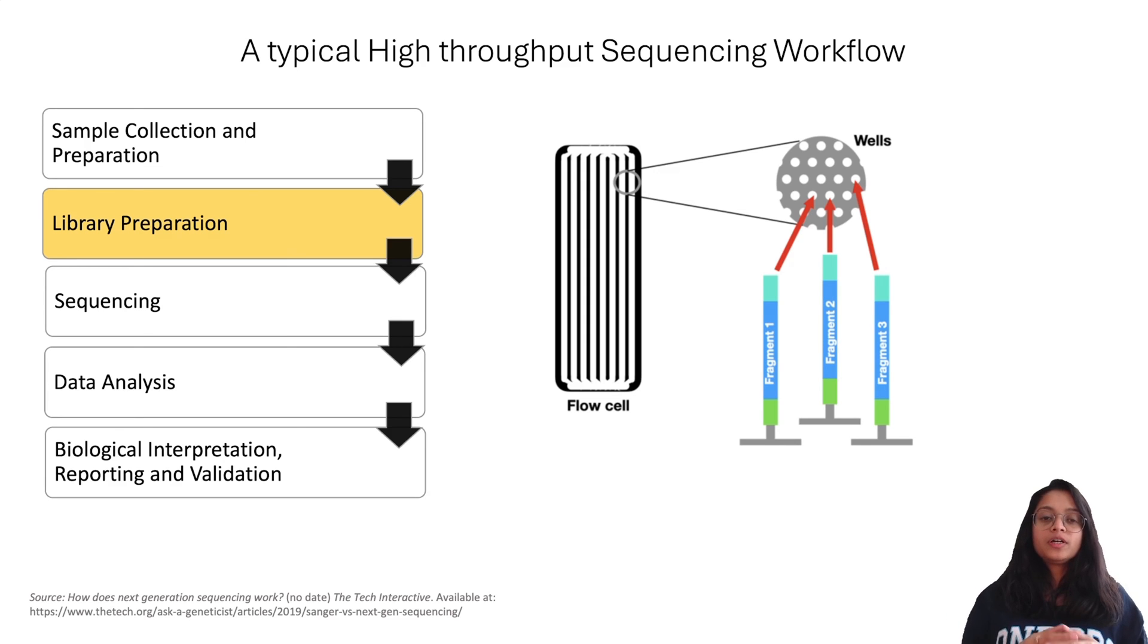Illumina uses bridge amplification and sequencing by synthesis to amplify and sequence the DNA. I am not going to go into the details of these methods as there are a lot of resources available on the web, including videos and articles that explain bridge amplification and sequencing by synthesis. If you are interested to learn more, I will be adding links to those resources in the description section below.